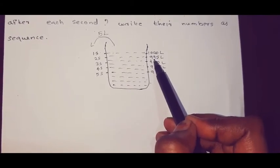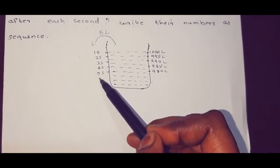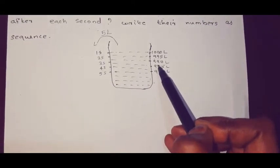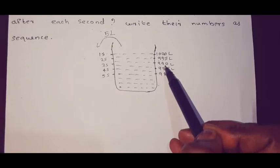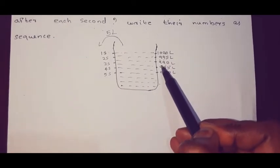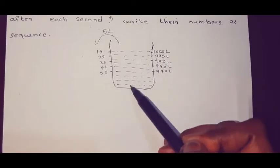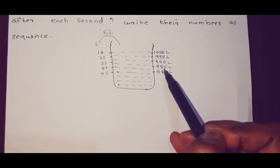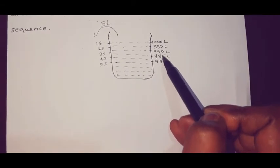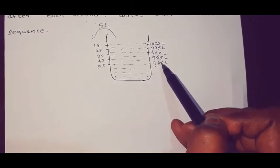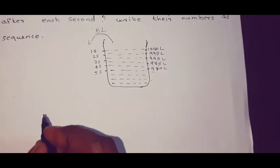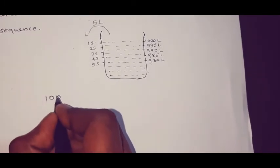In 1 second we say 1000 minus 5 liters. If we add 1000, minus 5 liters equals 995 liters. Then in 2 seconds, 995 minus 5 liters equals 990 liters. Then we use the water level. Then we use the sequence.